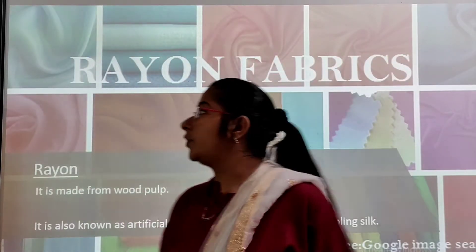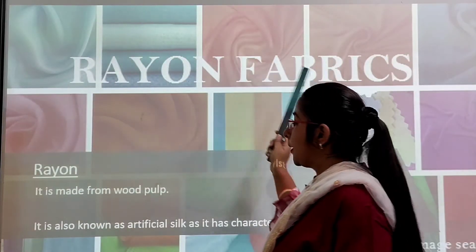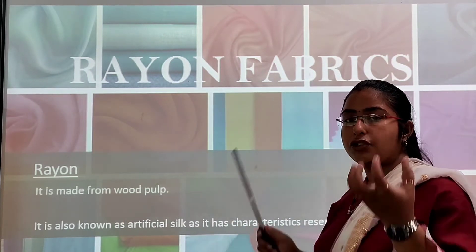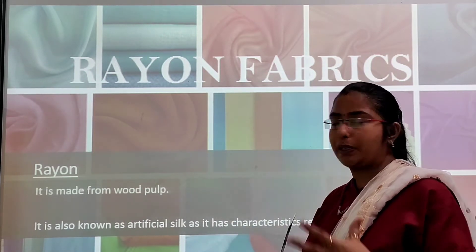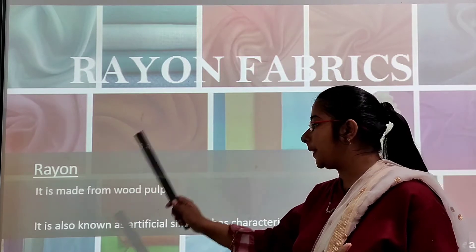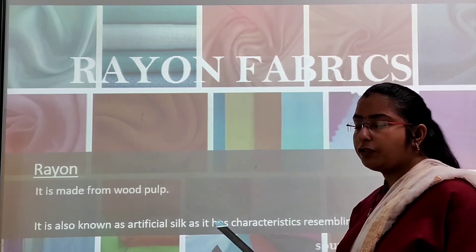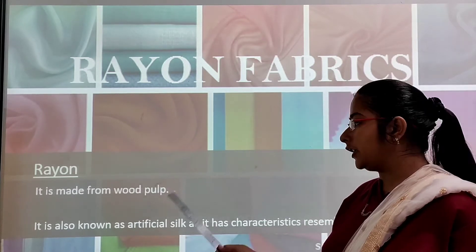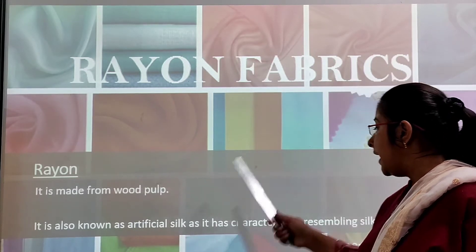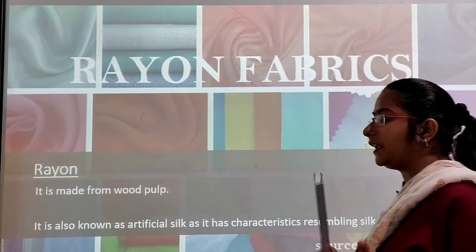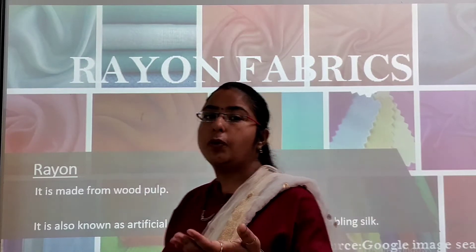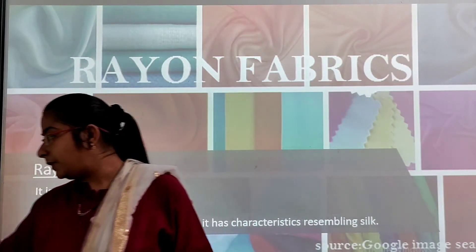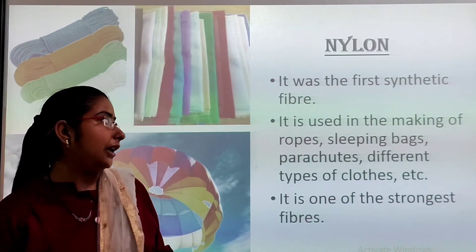Now we will see about rayon fabric. It is made from wood pulp. It is also known as artificial silk because it has characteristics resembling silk. Rayon is made from wood pulp.